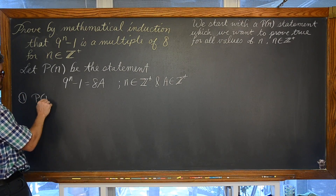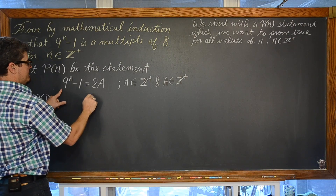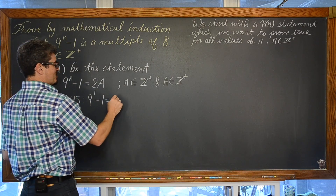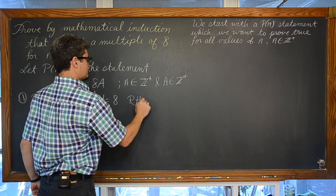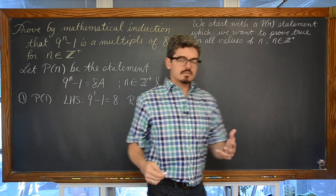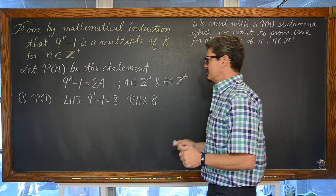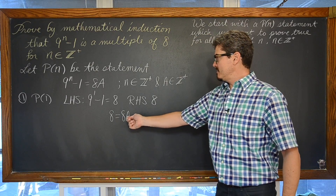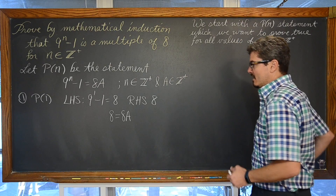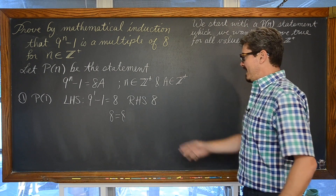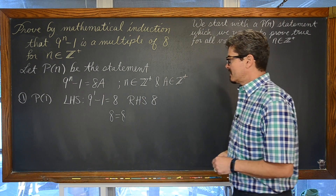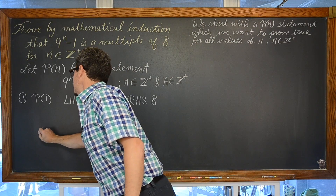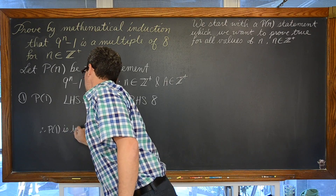Then we are going to show: consider n equals 1 and prove that p of 1 is true. For step 1, p of 1: we have 9 to the first power minus 1 on the left-hand side, which is equal to 9 minus 1, which is 8. On the right-hand side we basically have an 8. Clearly we know that 8 is a multiple of 8, and the two sides are equal as long as a is equal to 1. So we have proven that p of 1 is true.